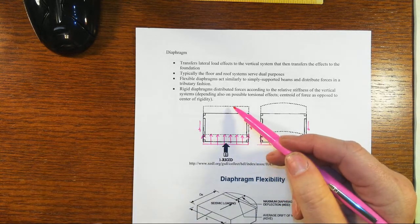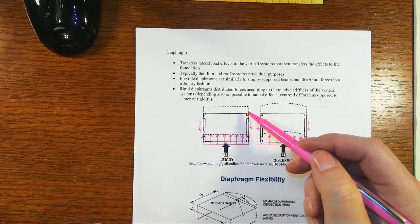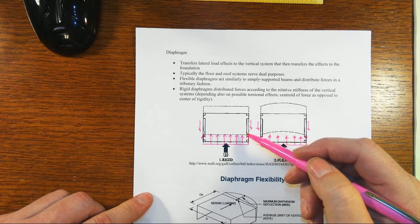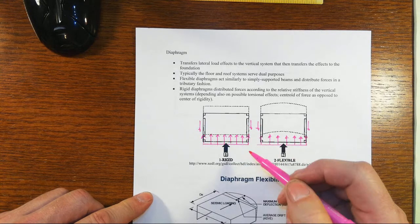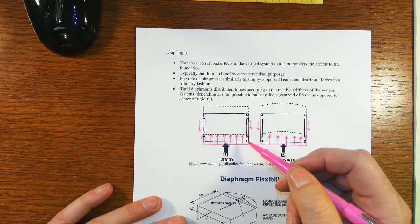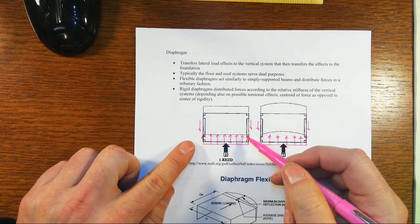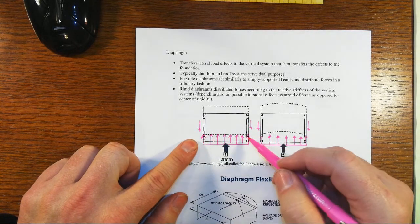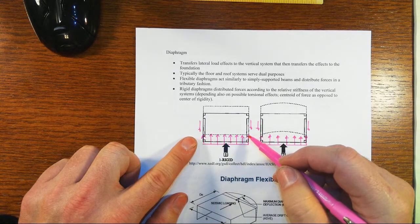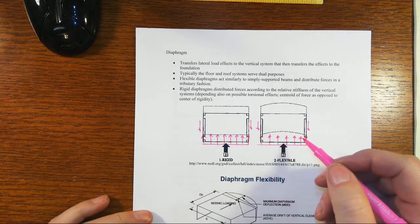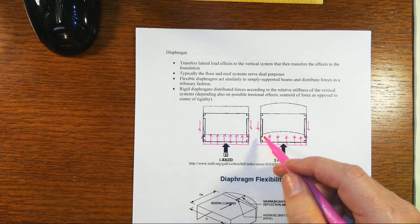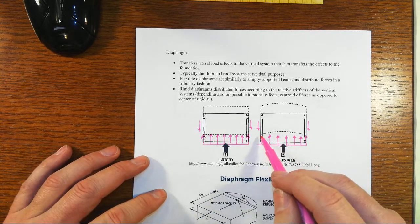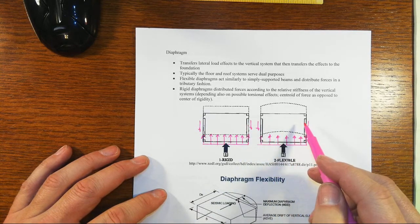A rigid diaphragm is mostly not going to deform as it responds and transfers those forces. It may displace, but it won't have much of a change in shape. That would be typical of many concrete floor systems, which is what you have in most commercial buildings. Some steel floor systems will also look like that, but if you have a timber system for the floor system, and therefore for the diaphragm, it's far more likely that you're going to have what's called a flexible one, where the shape of the diaphragm is going to change.